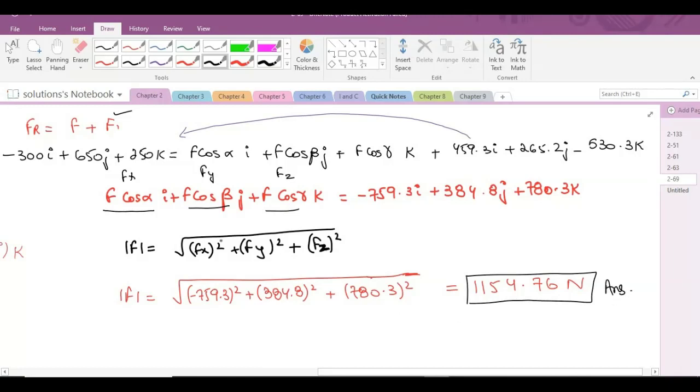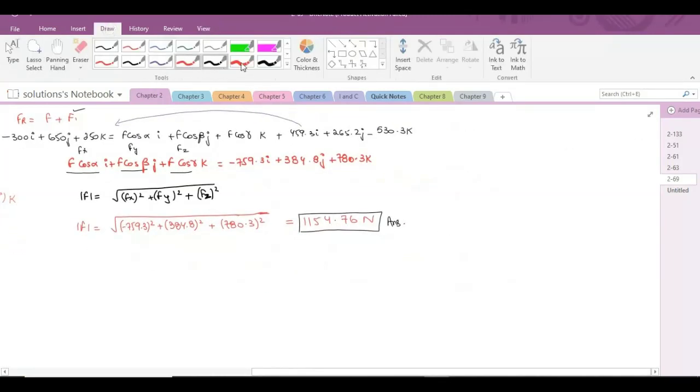Now we have to find the coordinate direction angles, meaning alpha, beta, and gamma. For coordinate direction angles, we know that cos alpha equals Fx, the x component of force F, divided by its magnitude.